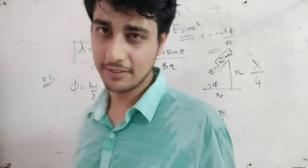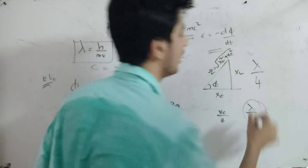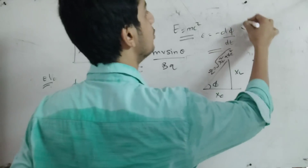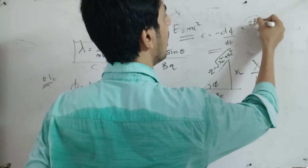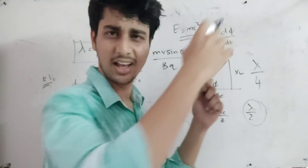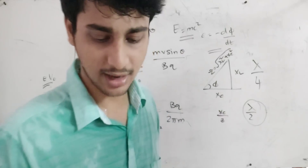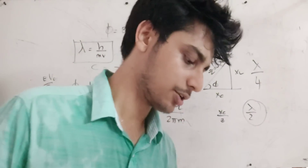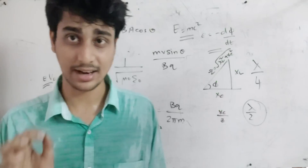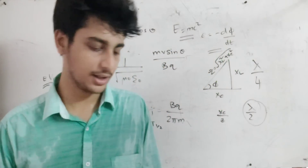Lambda by 4 — wavelength divided by 4. Dipole is lambda by 2. Root 2RH — tower height, satellite maximum distance of coverage. That's the equation. Gates: OR gate and AND gate — simple. AND gate and OR gate.